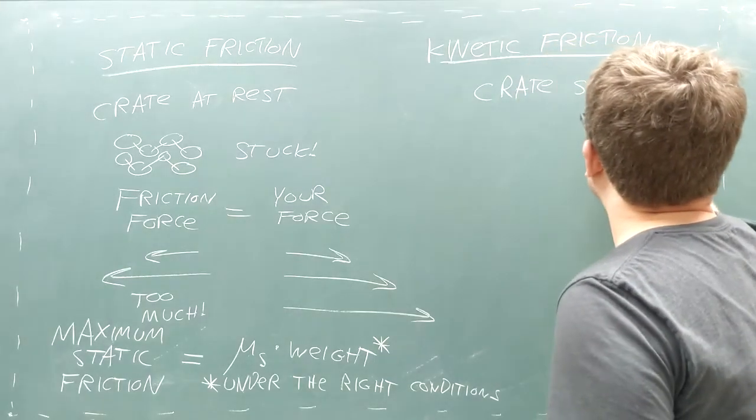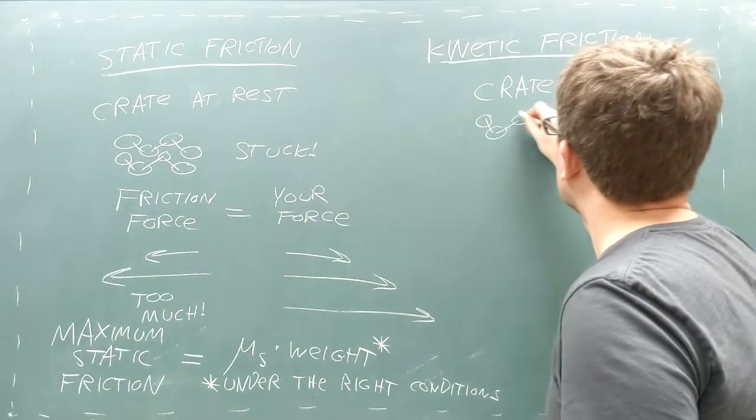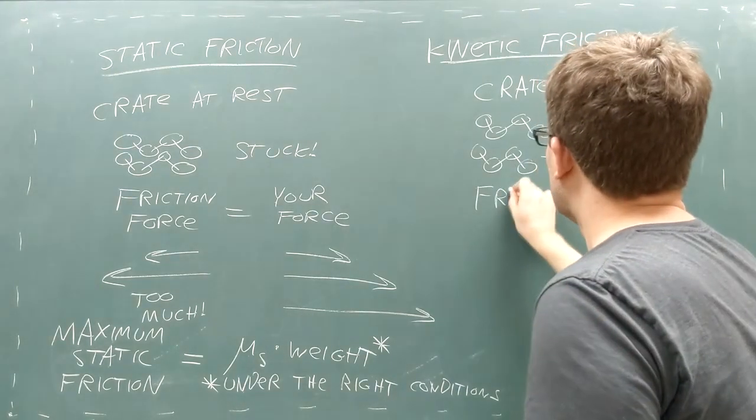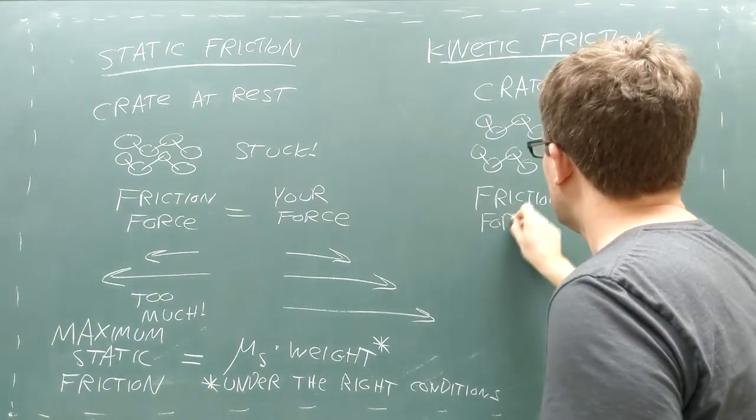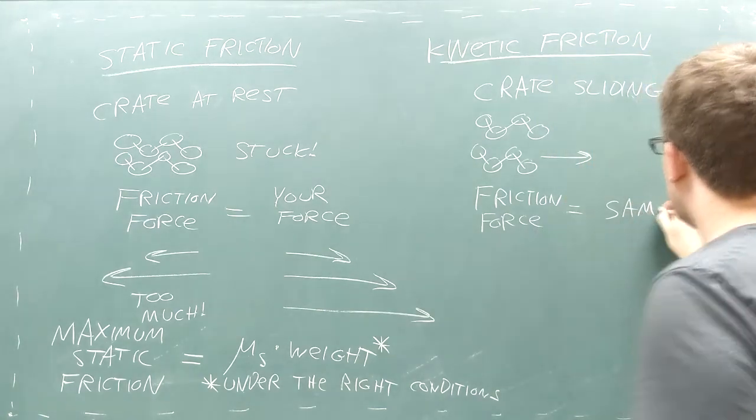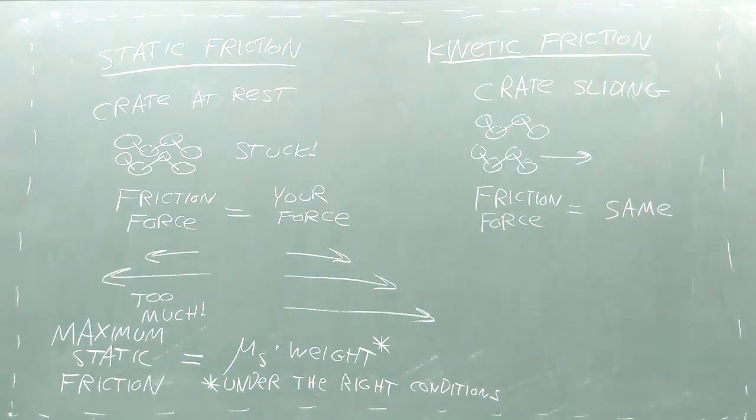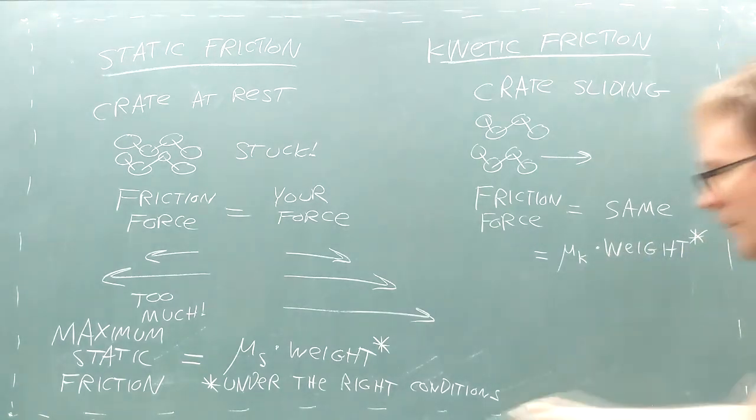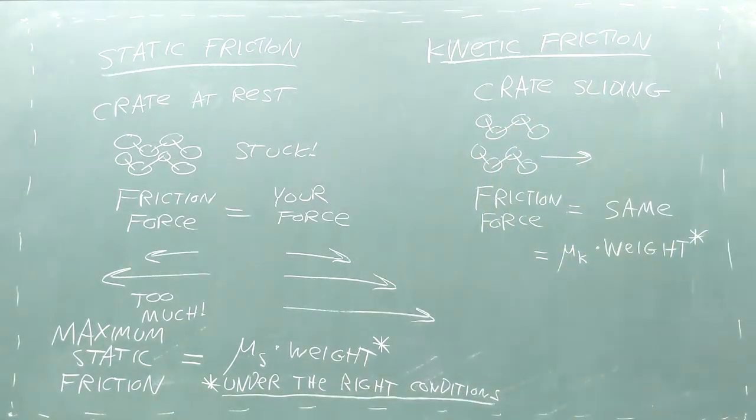Once you overcome the static friction force and the crate begins to move, kinetic friction takes over. The kinetic friction between the crate and the floor always has the same value, which also depends on the stickiness between the atoms and the normal force. This time, we use the coefficient of kinetic friction instead of the coefficient of static friction.